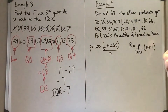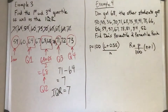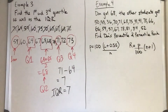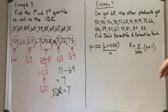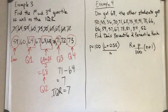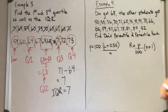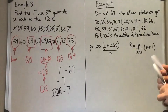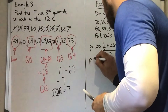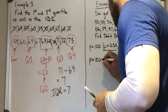For our second example, Don got a 68. The other students got all of these grades — find his percentile and percentile rank. With a percentile, you're finding the percent of the set that are below a certain value. So looking at Don's 68, we're going to find the percentile by using our percentile formula.